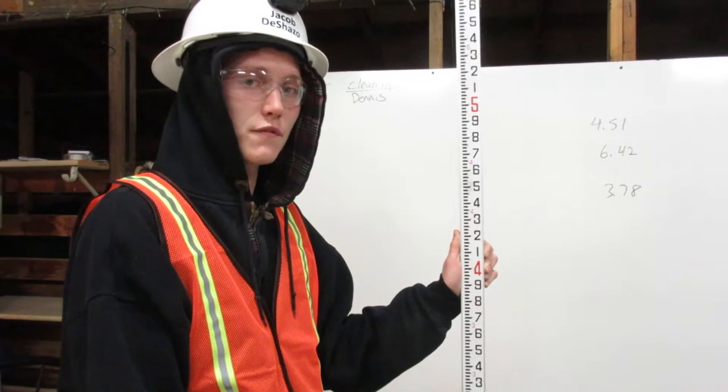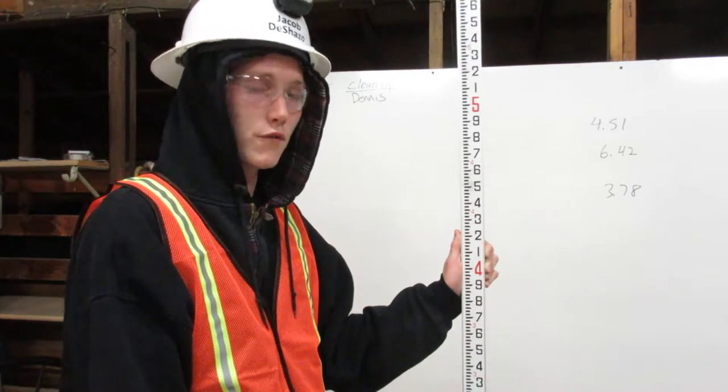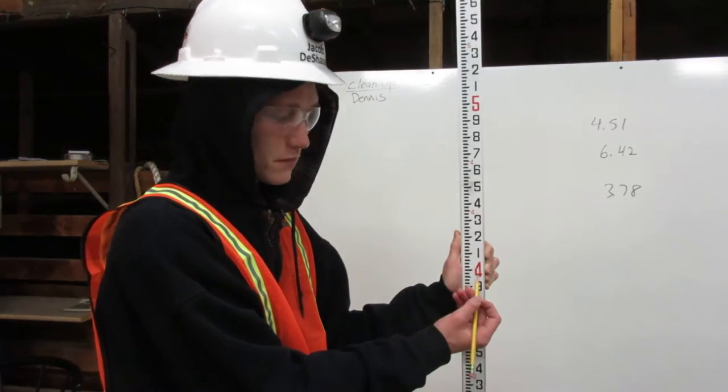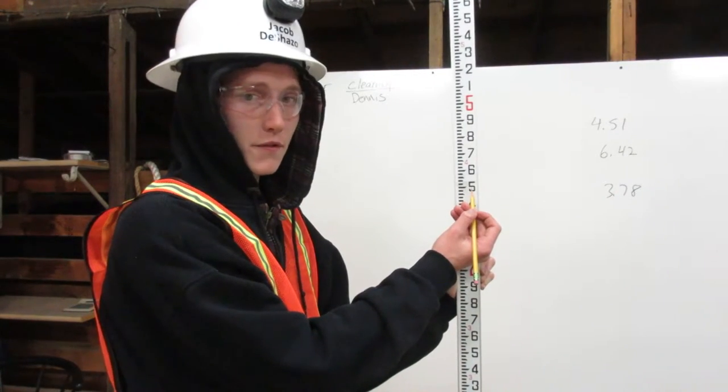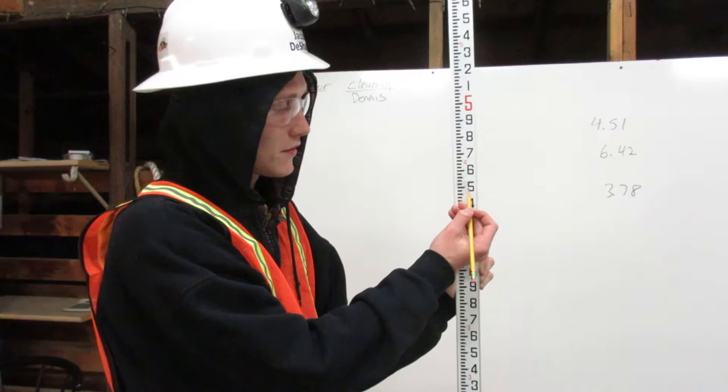To find 4.57 feet on the engineer's rule, first go to four feet, next go up to 55, which represents 50, then count to seven.